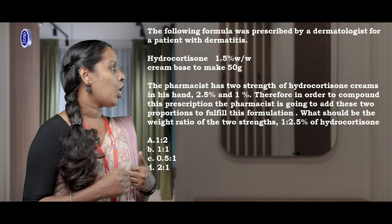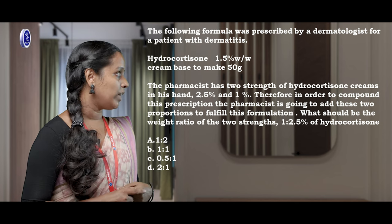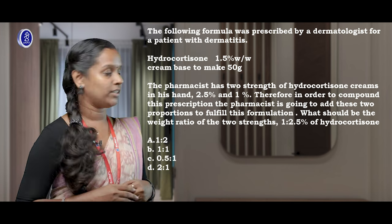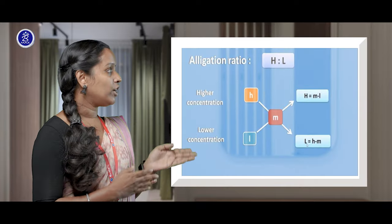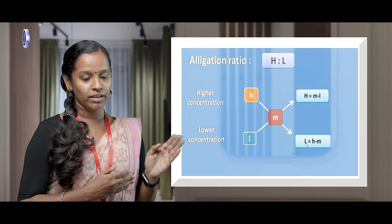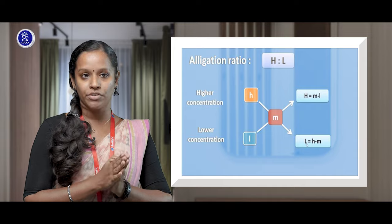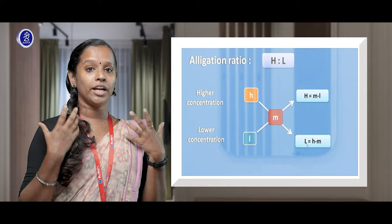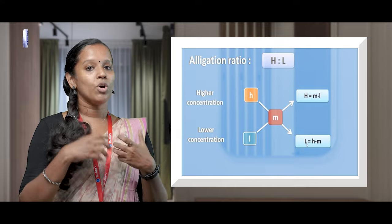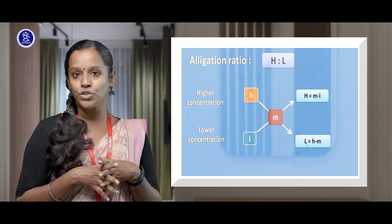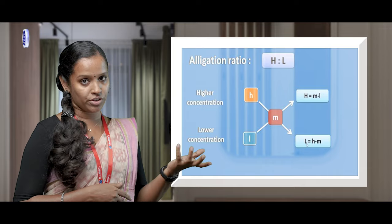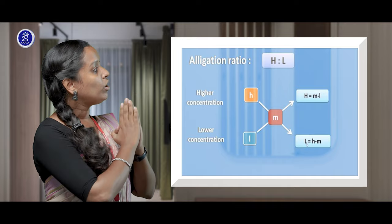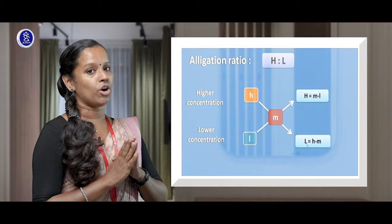The options are: option A is 1 to 2, option B is 1 to 1, option C is 0.5 to 1, and option D is 2 to 1. Let me explain what the allegation method is. In this slide you can see that H is the higher concentration, L is the lower concentration, and M is the required concentration you have to make. When you have two concentrations and need to mix them to make a required concentration, you use the allegation method.